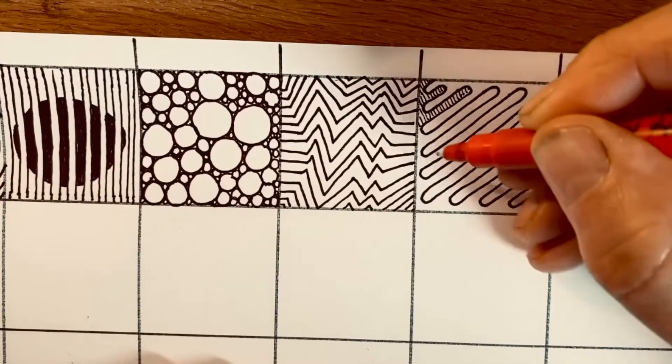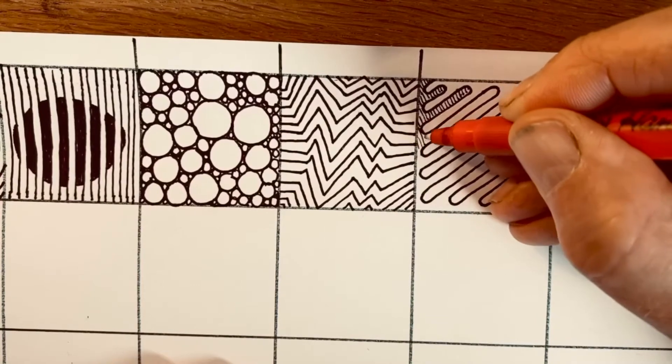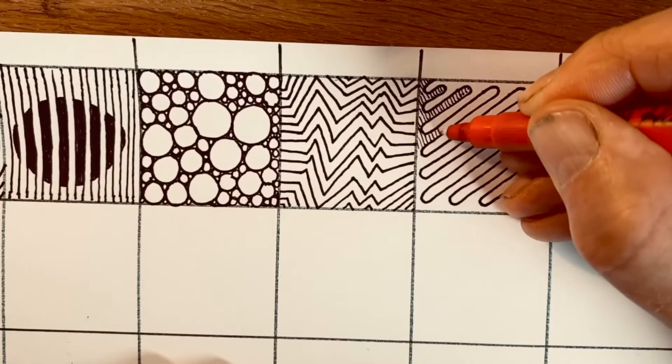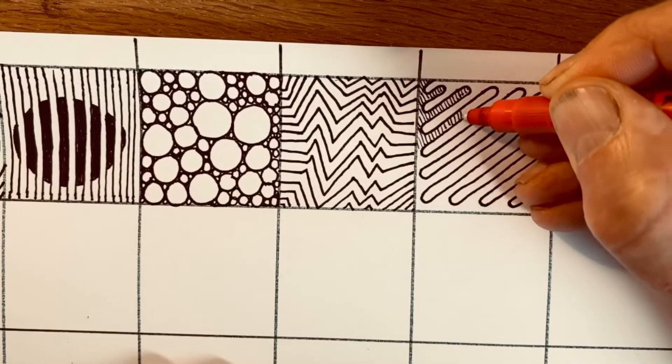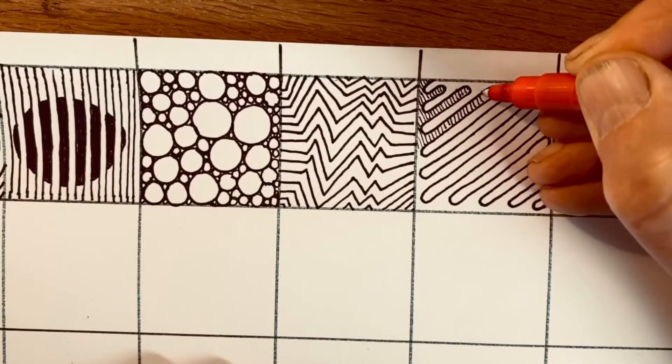Not coloring in the whole thing. This would be better with pencil I think but I'm doing black ink so you can see it clearer. See how I'm doing lots of little lines.